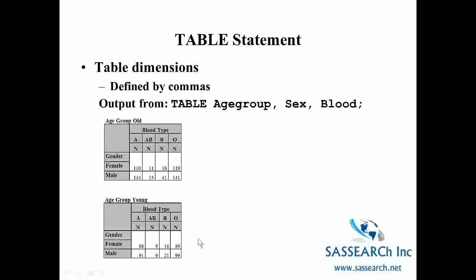Here is what our table looks like when we have the statement age group, sex, blood. The page is age group 'old' — this whole table is just for age group classified as old. And this table is age group classified as young. So age group defines our page, gender defines our rows, blood type defines our columns, and within each cell we have the count.